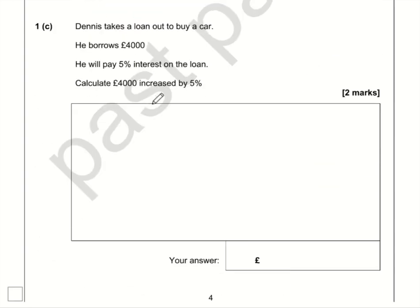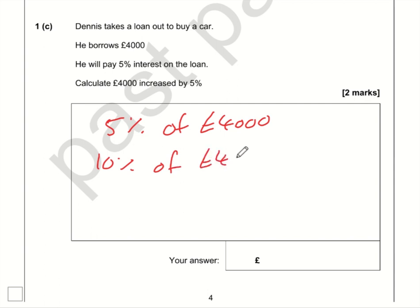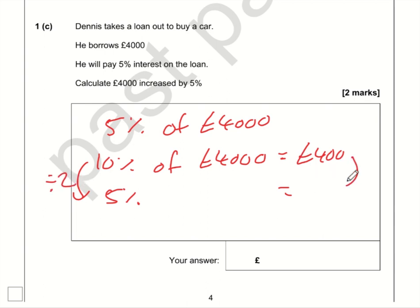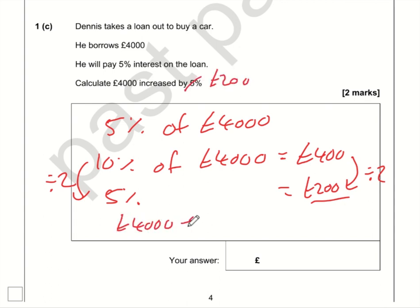For this question we need to calculate £4,000 increased by 5%. First, work out 10% of 4,000: ten percent is one tenth, so divide by ten, giving £400. Five percent is half of ten percent, so half of £400 is £200. Therefore, £4,000 increased by 5% is £4,000 plus £200, which equals £4,200.